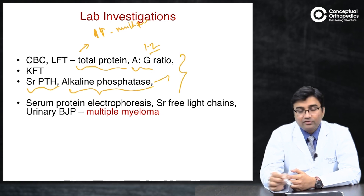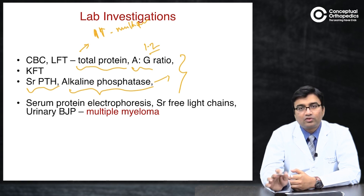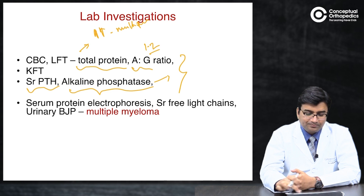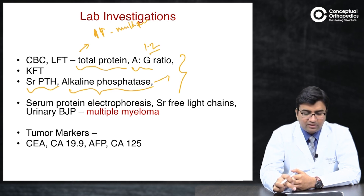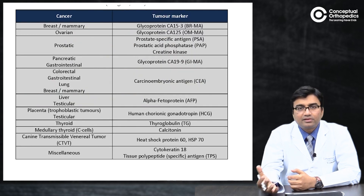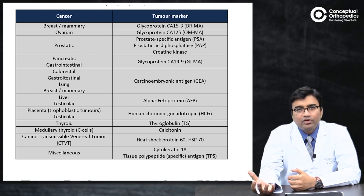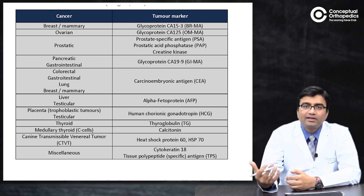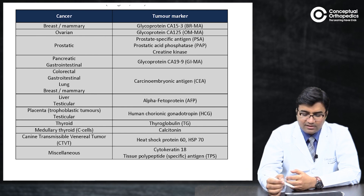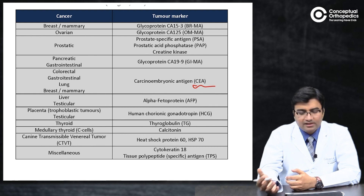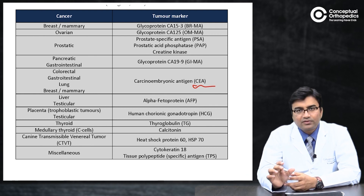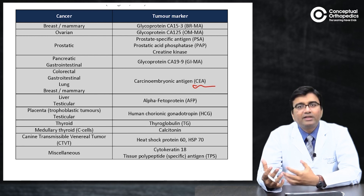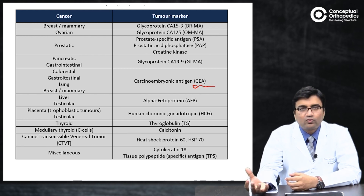If routine investigations reveal hyperparaproteinemia and a reversed albumin-globulin ratio, directly proceed to serum protein electrophoresis, serum free light chains, and Bence Jones protein to guide diagnosis of multiple myeloma. Tumor markers such as carcinoembryonic antigen (CEA), cancer antigen CA 19.9, CA 15.3, and alpha-fetoprotein are released by different organs. For example, CEA is associated with the GI system such as colorectal cancer, though these markers are not highly specific and must be correlated with clinical findings.